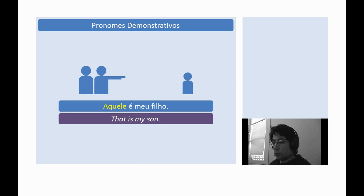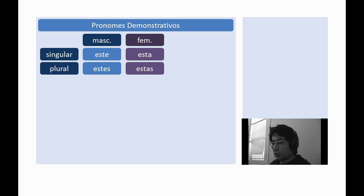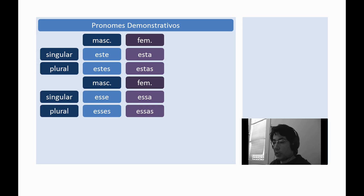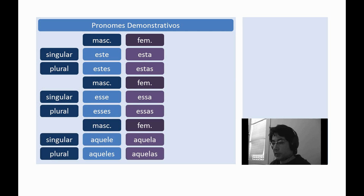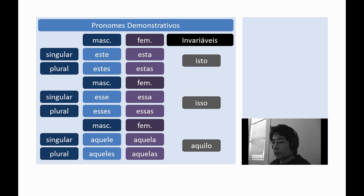In Portuguese, PRONOMES DEMONSTRATIVOS can vary in gender and number. Let's see: este, esta, estes, estas. Esse, essa, esses, essas. Aquele, aquela, aqueles, aquelas. We also have isto, isso, aquilo. These three forms do not vary and they always work as true pronouns, replacing a noun. They don't work as adjectives.